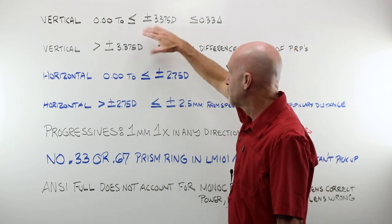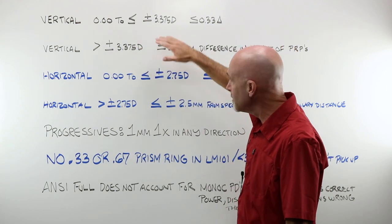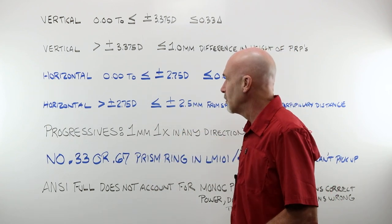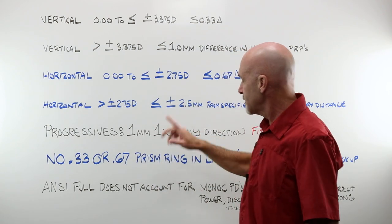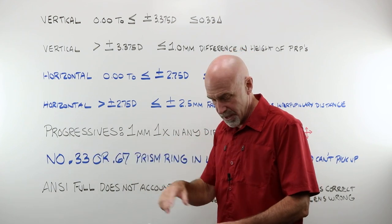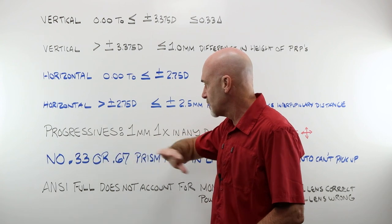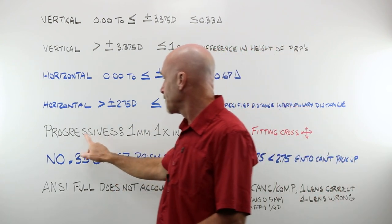Now, why are there two different ones? Vertical we can do per lens. Horizontal always works as a combination or combined or total amount. Now, let's get this out of the way. The quick guide shows a different set for progressive lenses.